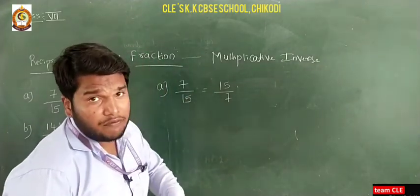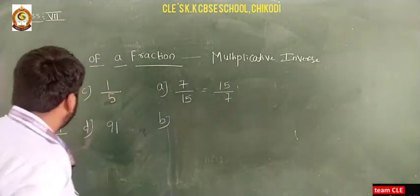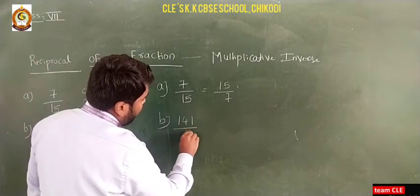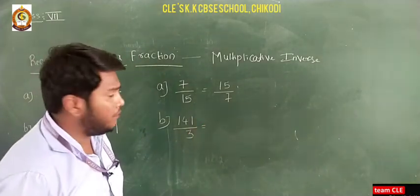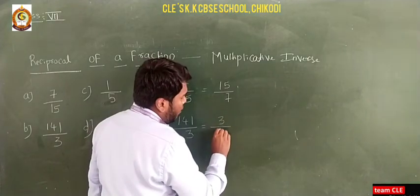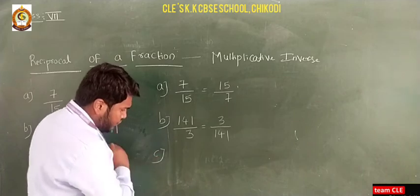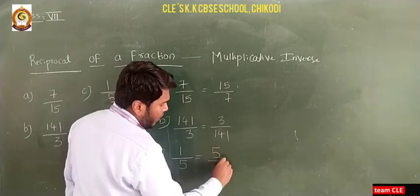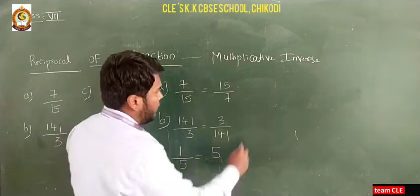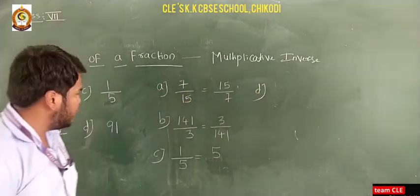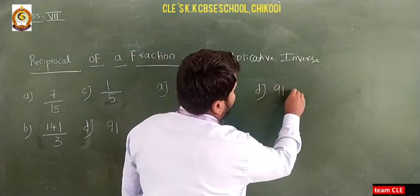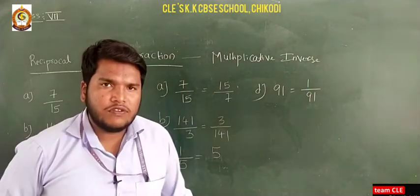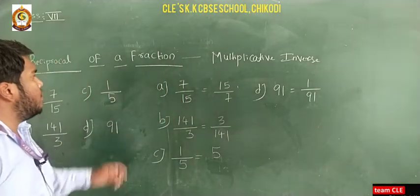Similarly, c) the reciprocal of 1/5 is 5/1, or simply 5. And d) what is the reciprocal of 91? You may write this as 1/91. So this is the concept of reciprocal of fraction and these are some of the problems. Please note down this concept and problems.